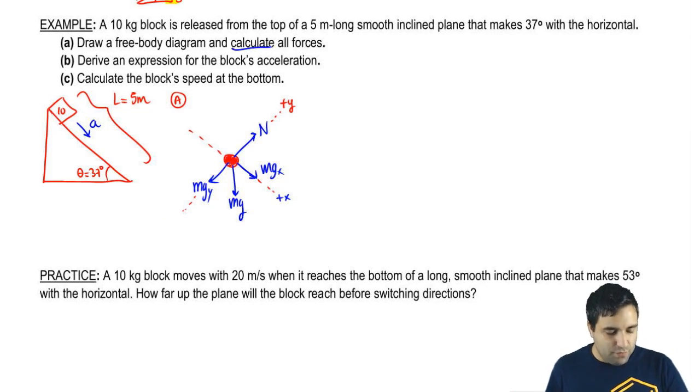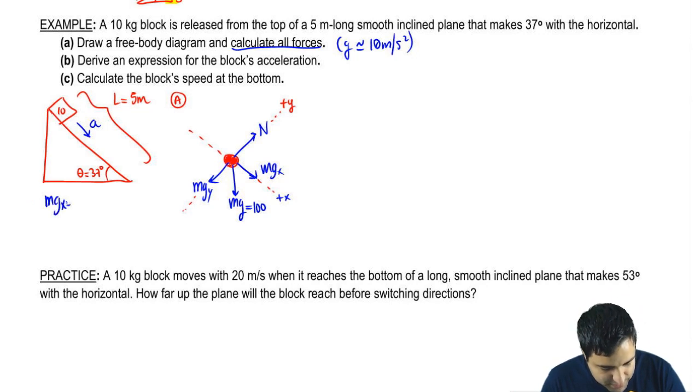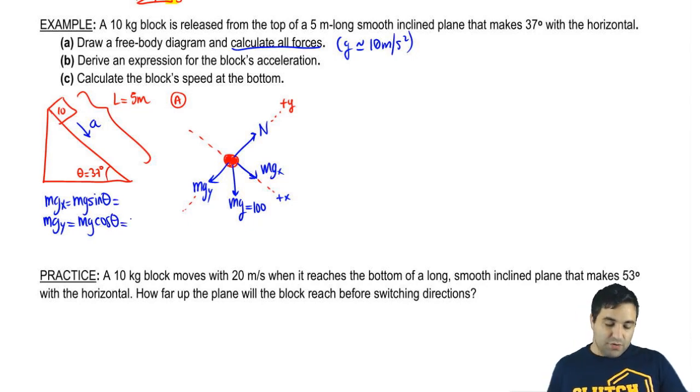Now we want to calculate all the forces. I'm going to use gravity approximately 10 to make life a little bit easier. Mass is 10, so 10 times 10 is 100. mgx, remember mgx is mg sine of theta, right? And mgy is cosine of theta. This is backwards from what you usually do. So this is 100 sine of 37 and 100 cosine of 37. So this gives me a 60 and an 80.